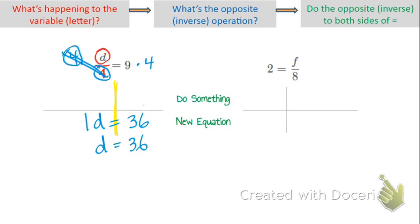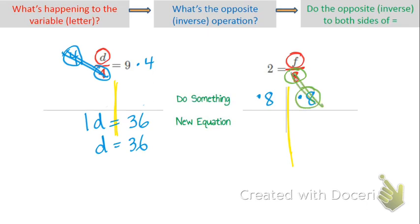The next one is the same process except the variable f is on the other side of the equal sign. What's keeping f from being alone? This is saying f divided by 8. I can undo dividing by 8 by multiplying by 8 on both sides. Dividing by 8 and multiplying by 8 cancel out, so I'm left with f by itself. On the left side, 1 times 8 is 8, wait — 1 times 8 is 16. Wait, so I have 16 equals f, which is the same as f equals 16.